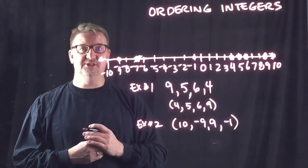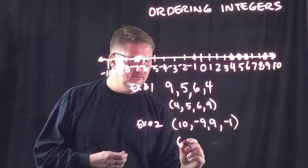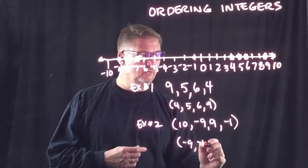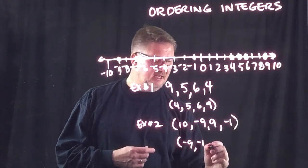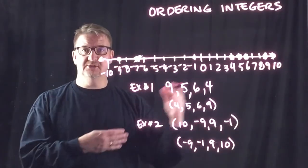If I want to order these from least to greatest, then I just read from left to right. So, my first number is negative 9. My next number is negative 1. My next number is 9. And my next number is 10. So, that's in order from least to greatest.